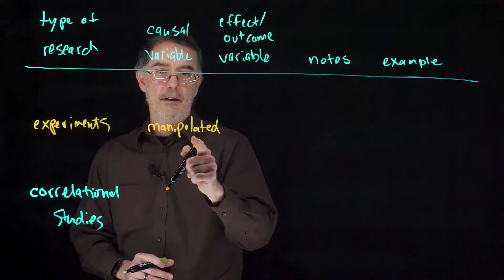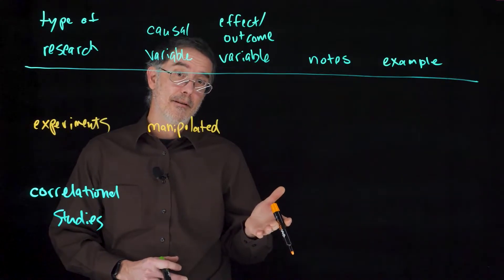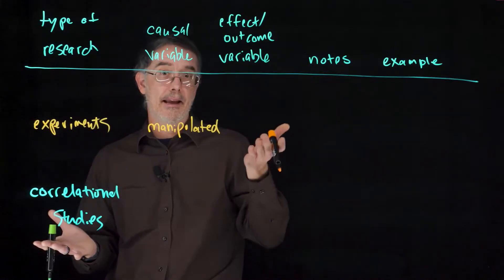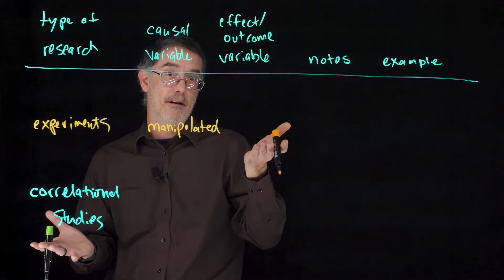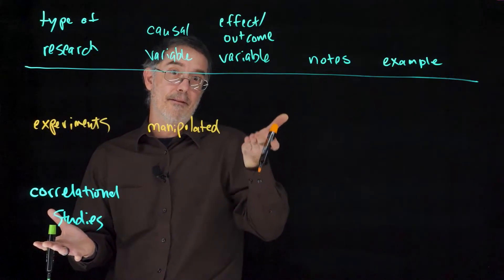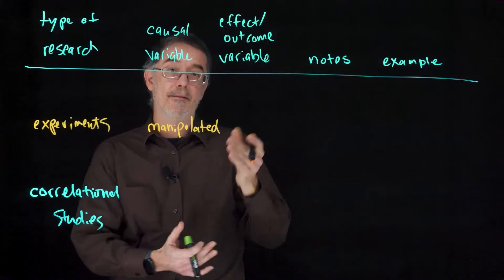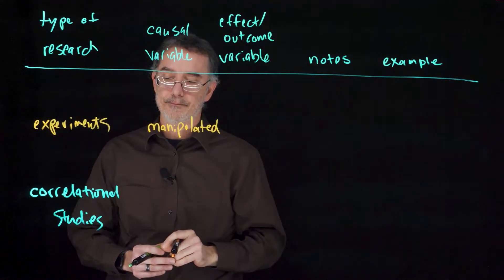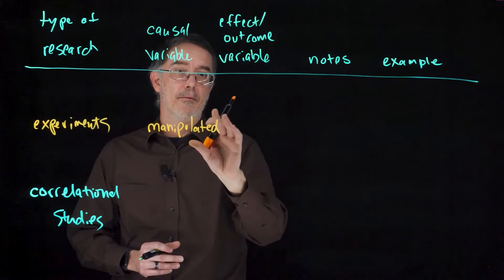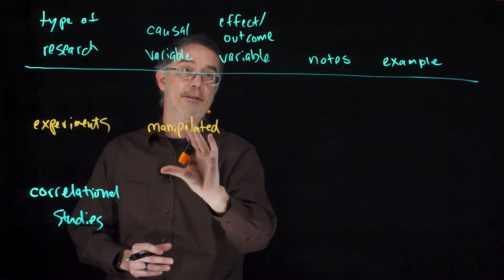Here, we could have participants come in and give them caffeinated coffee or decaffeinated coffee. Those in the caffeinated condition would have caffeine; those in the decaf condition would not have any caffeine. In an experiment, you would manipulate the causal variable — caffeine, for example.